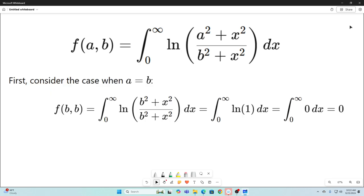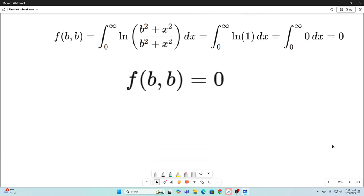All right, so first we're going to consider the case when a is equal to b. And if you do that, you get the following expression: f(b,b) is just equal to the integral from 0 to infinity of the natural log of something over something else. That's just going to be natural log 1, which is of course 0. So f(b,b) is equal to 0, and we'll be using that later on in the video.